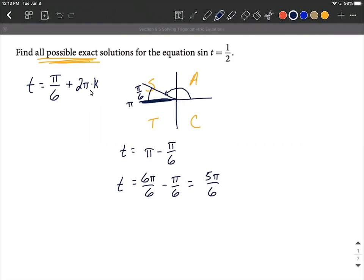That would account for wrapping all the way around an additional time and give us these coterminal angles. We're going to do the same thing with our five pi over six. We're going to say plus two pi multiplied by k.